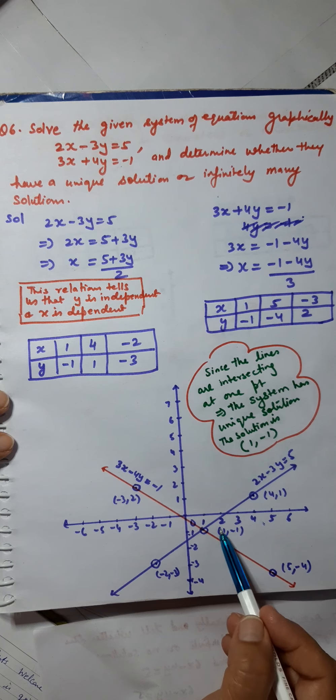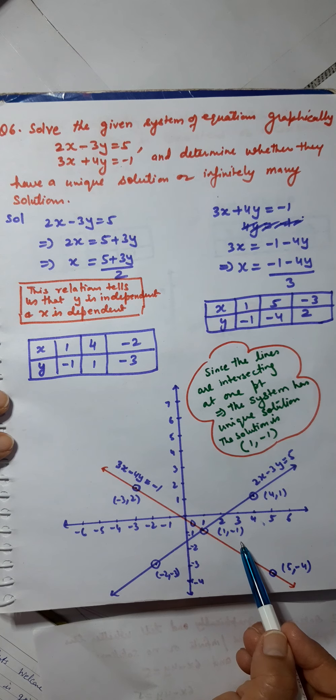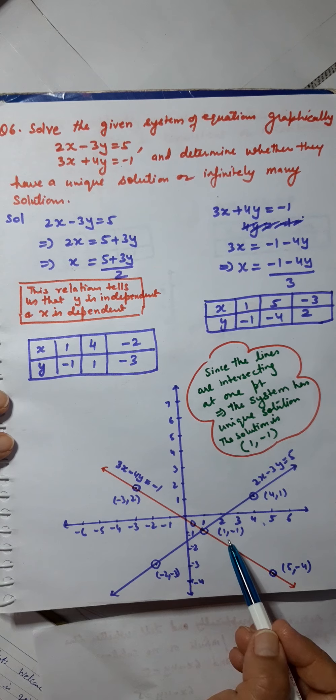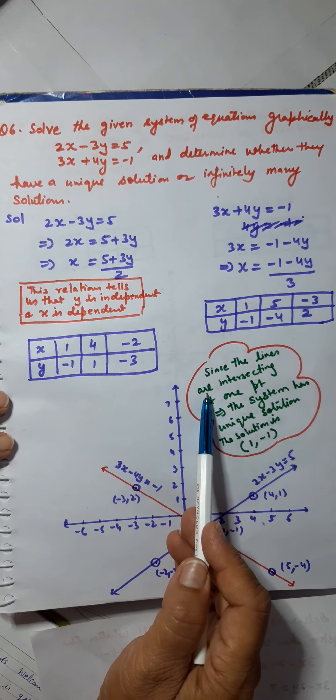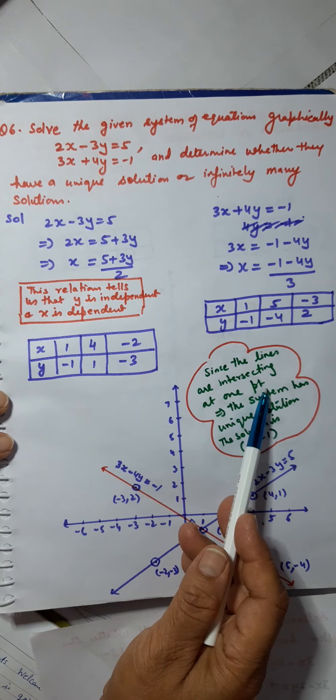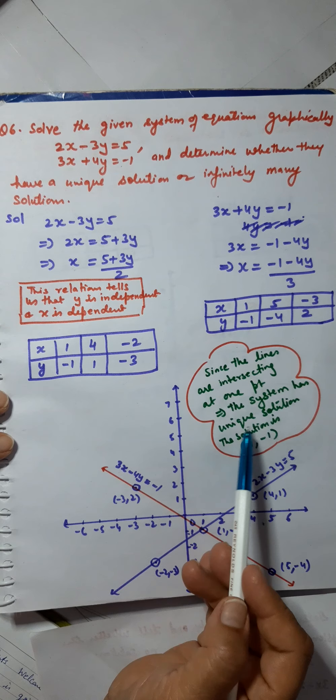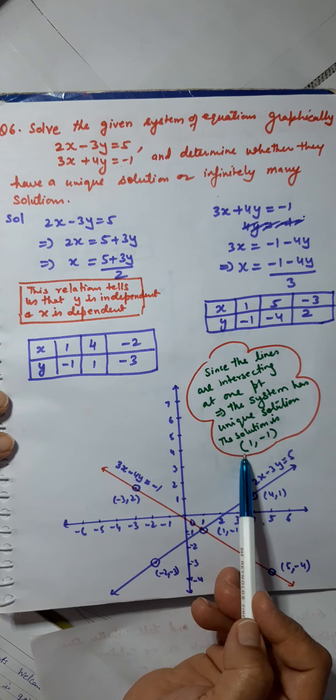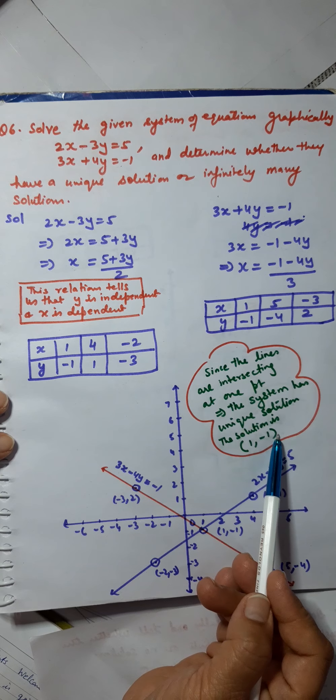This point of intersection is called the solution of the equations. Since the lines are intersecting at one point, the system of equations has unique solution, and the solution is 1, minus 1.